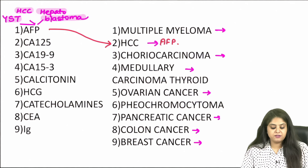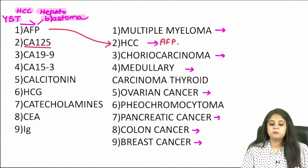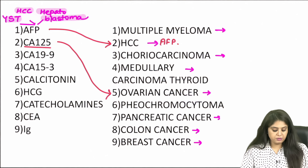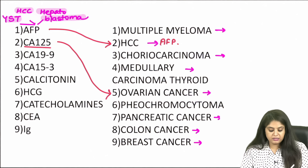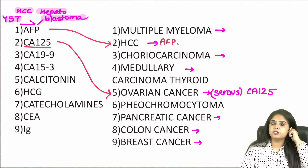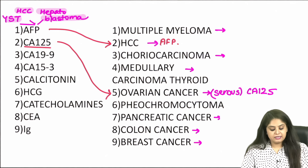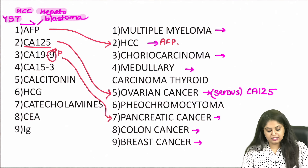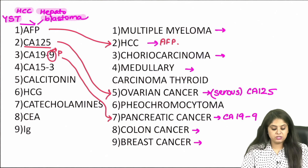Coming to the next is CA-125, something that came in the recent INICT exam also. This is very important for ovarian tumors, especially the surface epithelial tumors and in particular the serous ovarian tumors. The next one is CA-19-9 — the 9 gets converted into a P, so we match it with pancreatic cancer, a previous year FMG question.